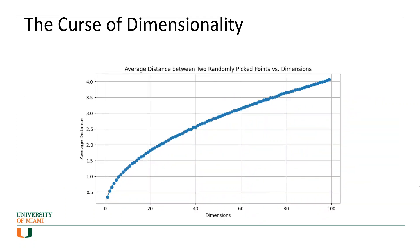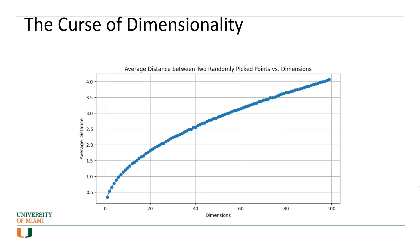It gets worse because as the number of dimensions increases, the likelihood of having a sparse space also increases. Consider the average distance between two randomly selected points in a hypercube. With two dimensions, the average distance between two randomly selected observations is almost 0.5. With a three-dimensional cube, it becomes 0.66. And when you increase to a 100-dimensional hypercube, the average distance between two randomly chosen points rises to 4, as indicated in this graph.